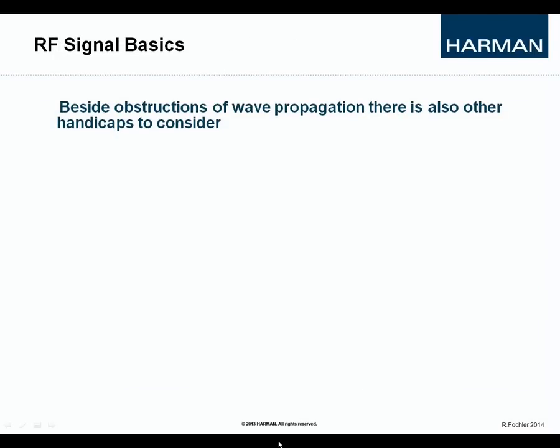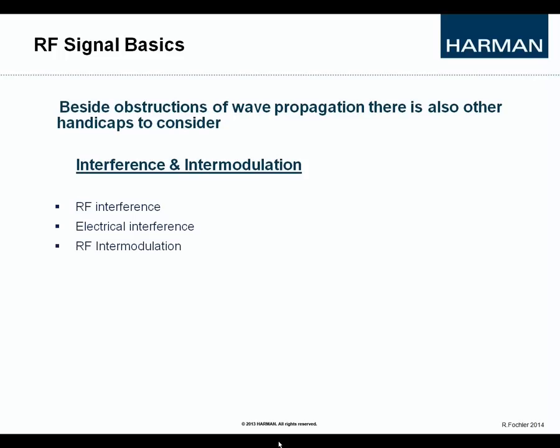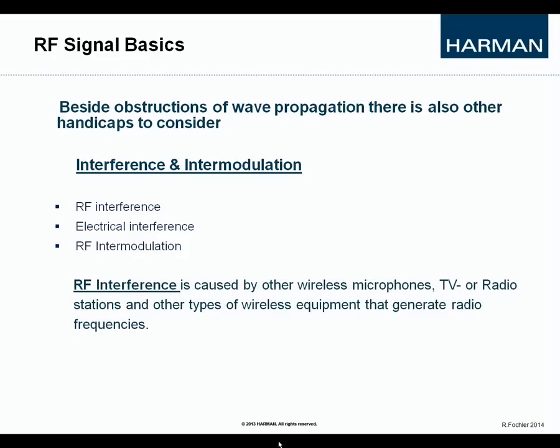Beside obstructions of wave propagation, there are also other handicaps to consider. That would be RF interference, electrical interference, and RF intermodulation. RF interference is mostly man-made electromagnetic energy that creates unwanted interactions between radio equipment. For example, two operators using wireless microphones at close or at the same frequencies will both face interference problems on their wireless channels. So you could say, one man's desired signal is the other man's unwanted interference, and vice versa.